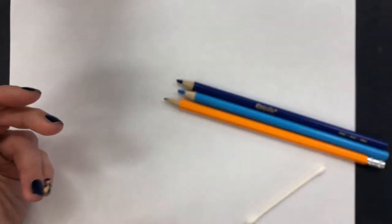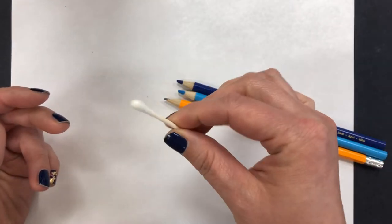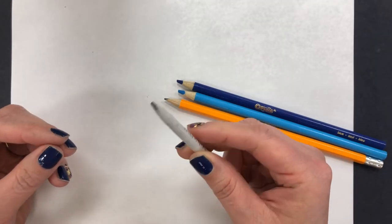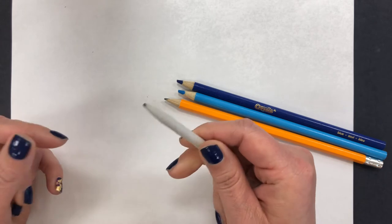even a square of toilet paper will do, a q-tip, and if you have a blending stump which I'm guessing most of us don't have at home, but I'll show you how that works too.